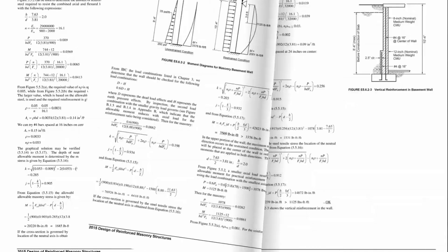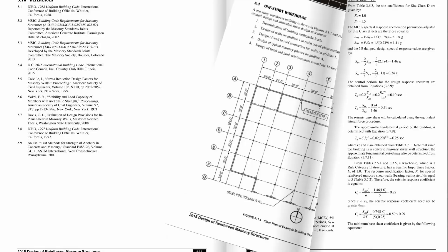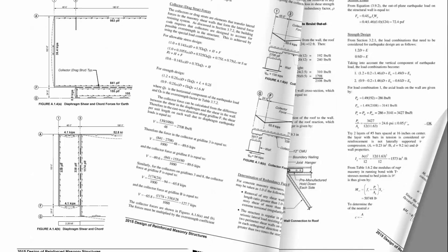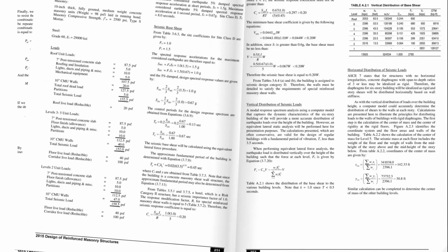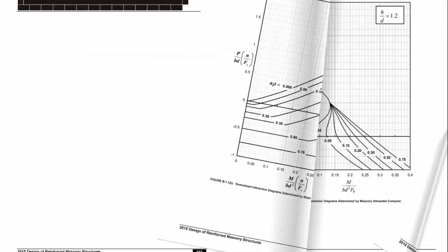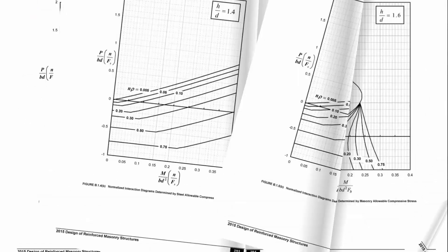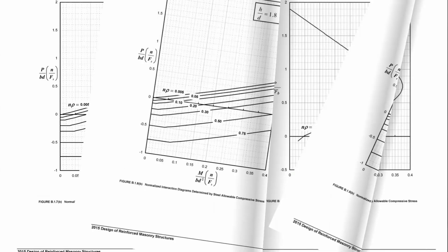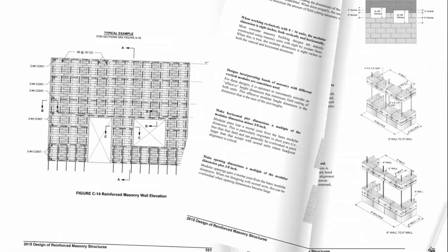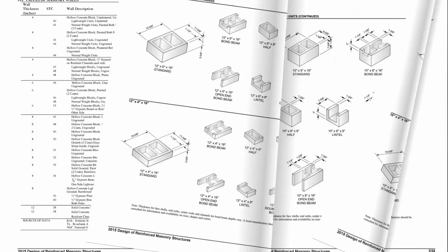The free flipbook version is available online at the Concrete Masonry Association of California and Nevada. Their website is, I believe, cmacn.org. I'll provide the link in the description below, and you should be able to find a free copy there.